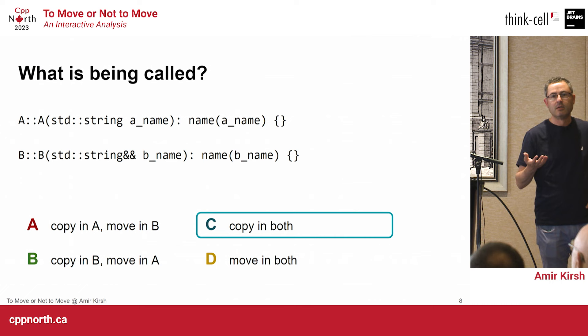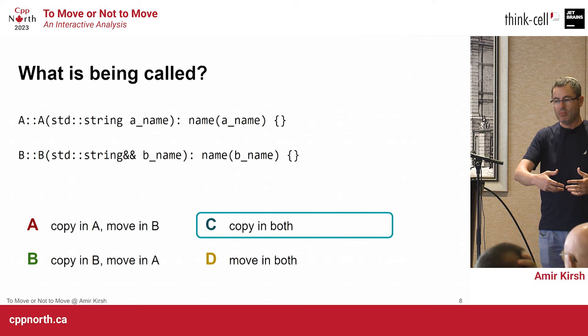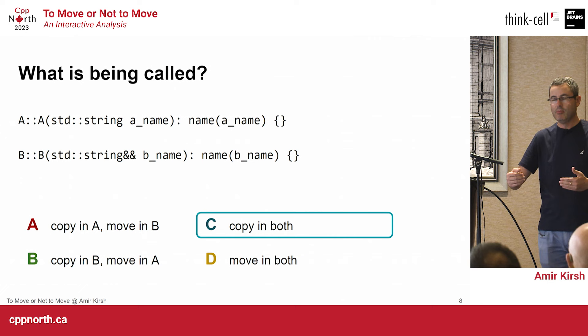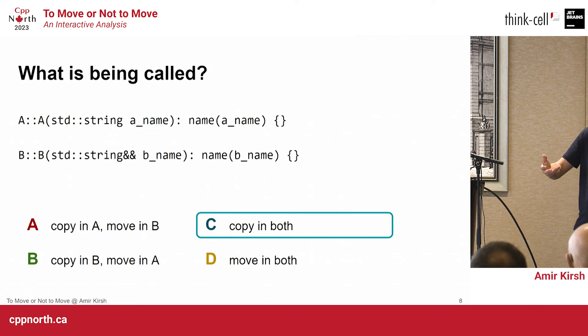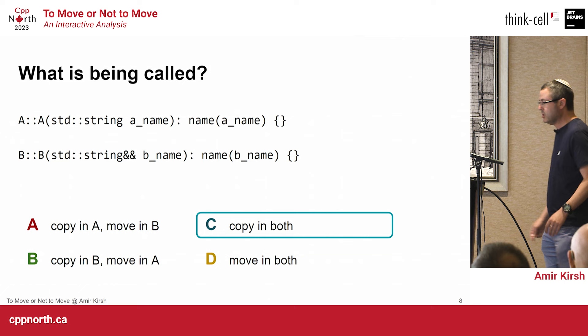The reason it is copy on both sides is that once you have a name, you are considered an lvalue. Once the parameters A-name or B-name have a name, the compiler says you may use them inside the curly brackets. So once a variable has a name, it is no longer considered an rvalue. In order to treat it as an rvalue, you have to std::move it.